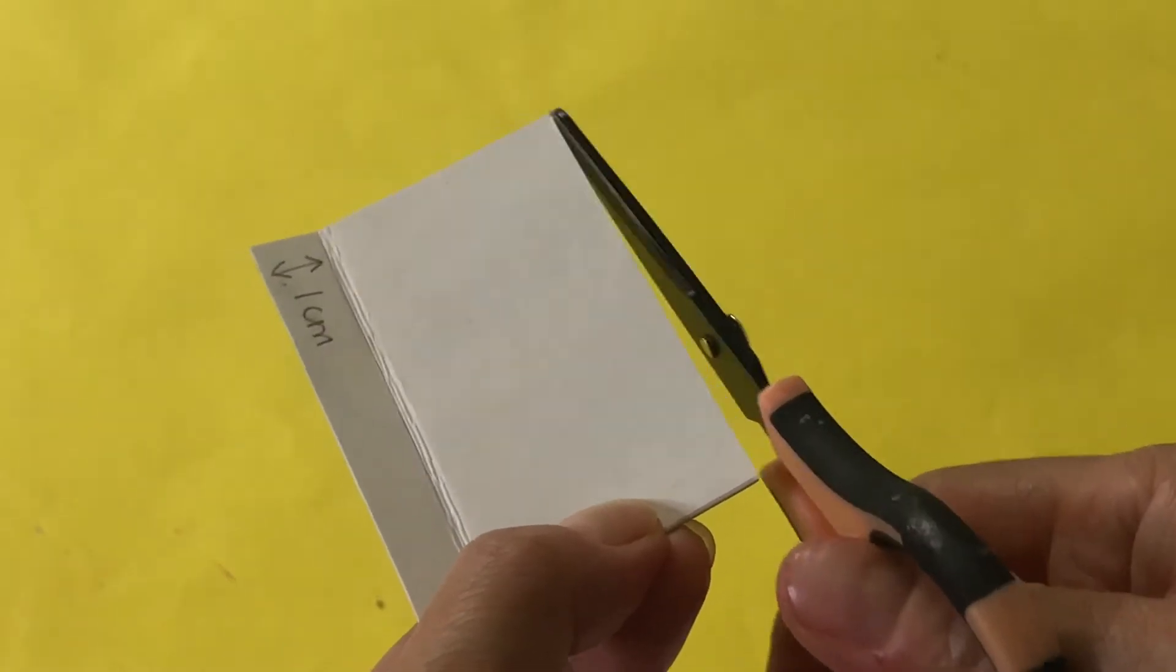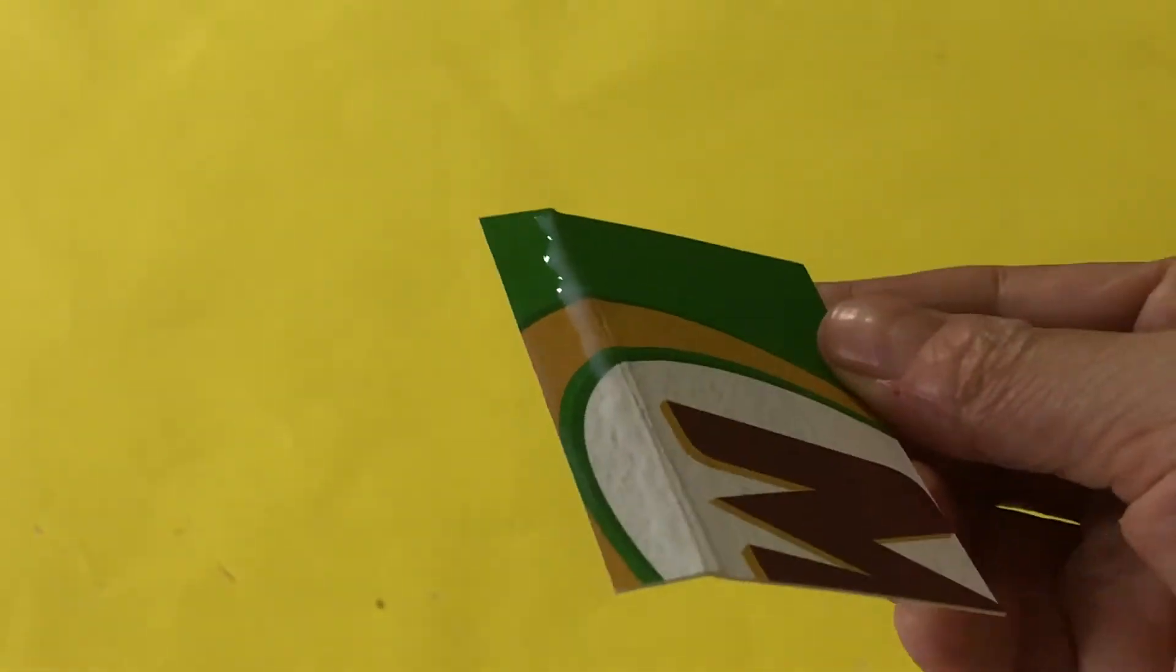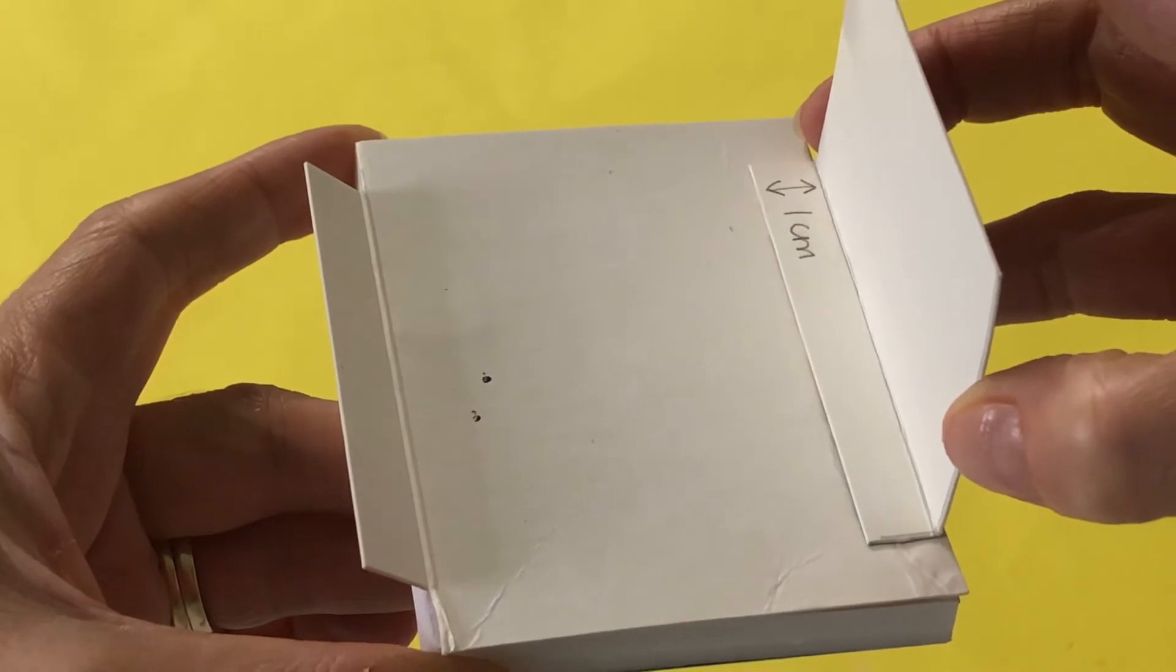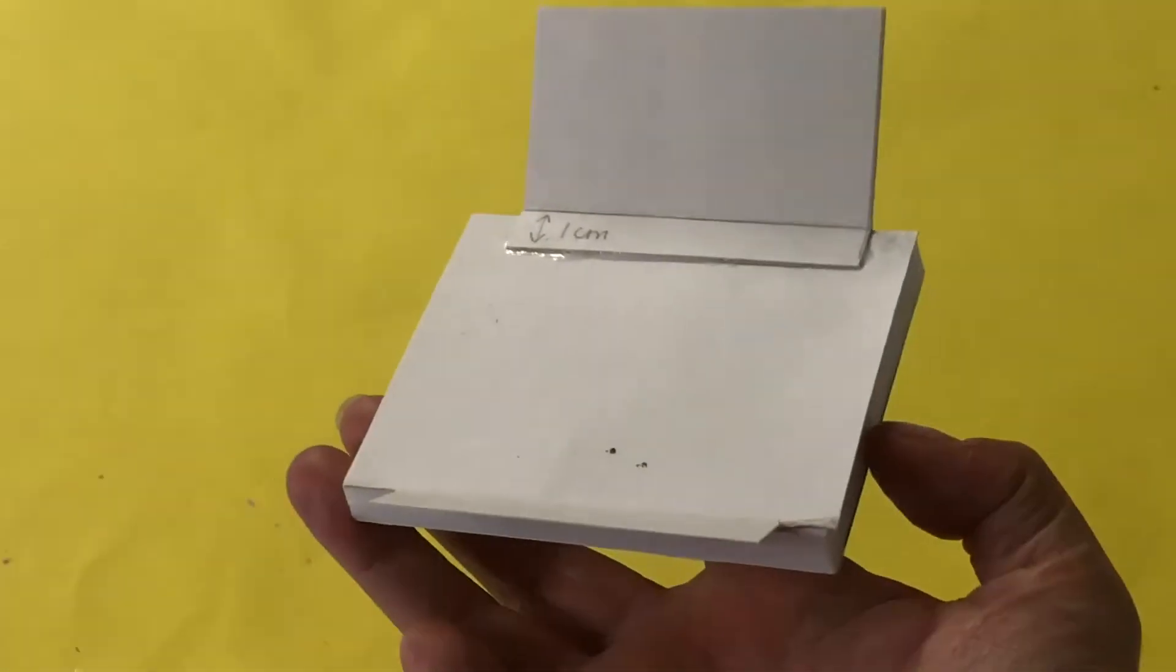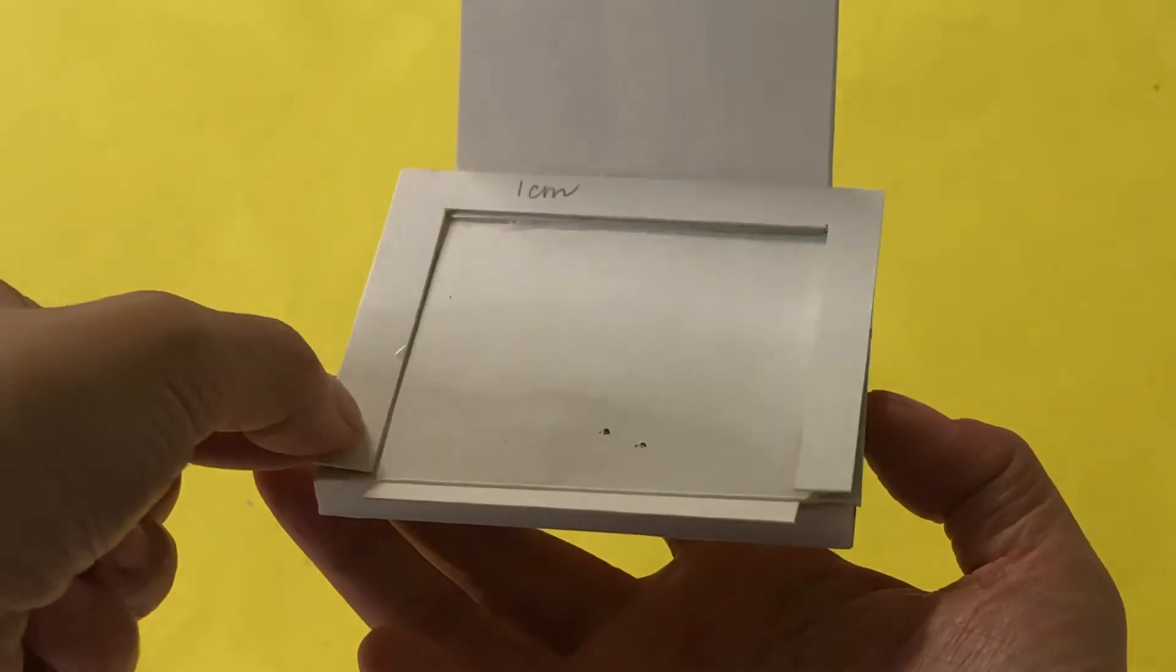Glue this tab to the back of your printer and you have the paper feeder. Next, stack and glue your three tray cutouts. Adhere two rectangles for a divider.